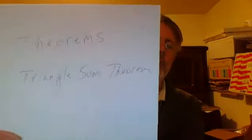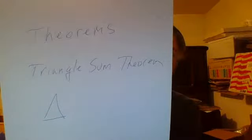The two theorems we're going to talk about are the triangle angle sum theorem and the triangle inequality theorem. The triangle sum theorem means that if you take a triangle and you measure all three of the angles and add up those angles, you will get 180 degrees.